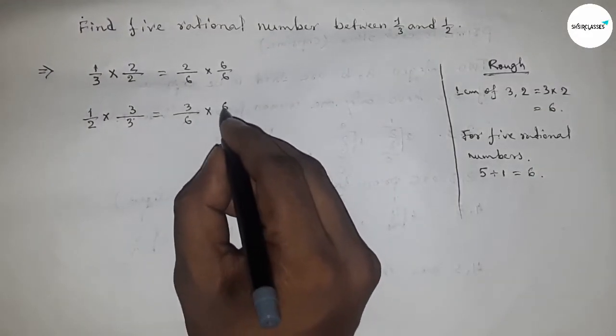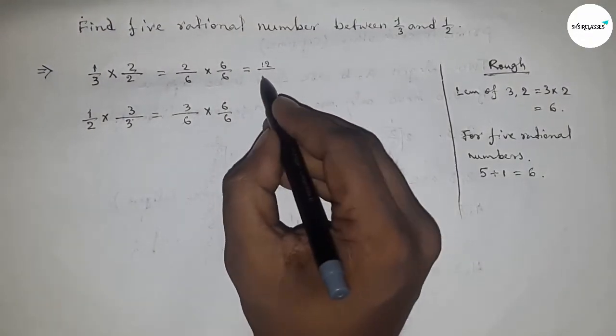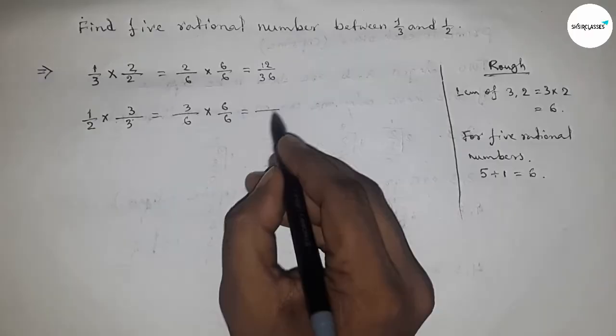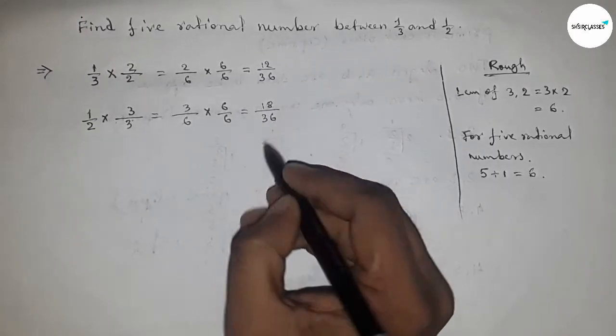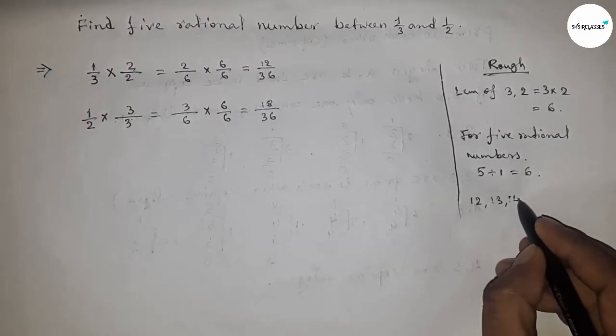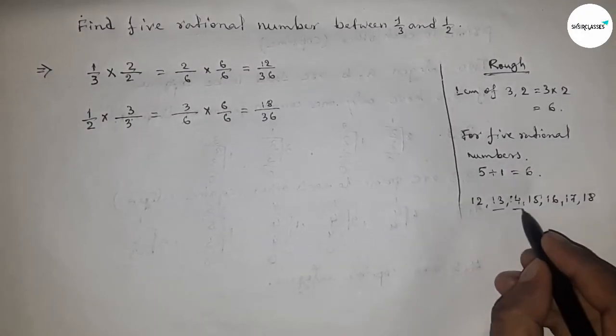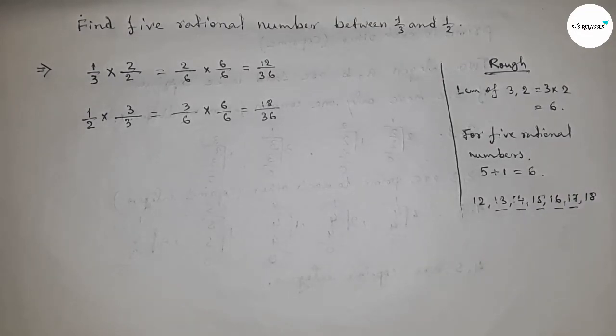So this is twelve by thirty-six and this is eighteen by thirty-six. Thirteen by thirty-six... so twelve, thirteen, fourteen, fifteen, sixteen, seventeen, eighteen. So we have to use these numbers to form the five rational numbers.